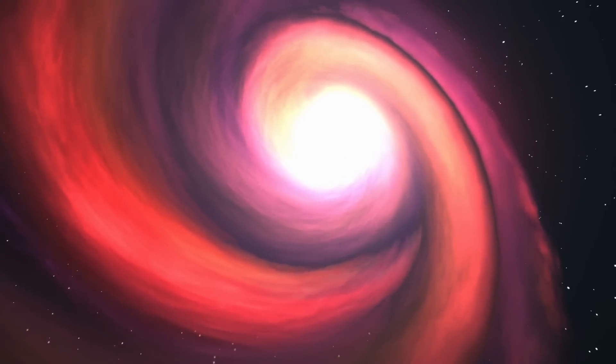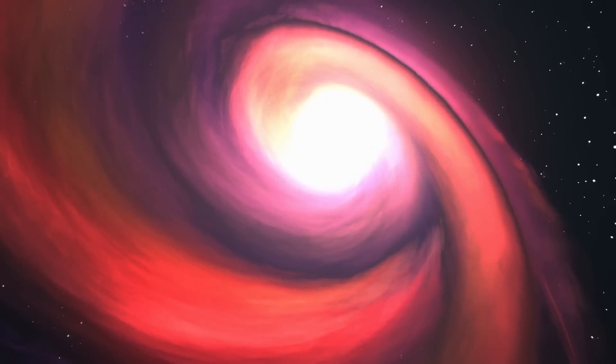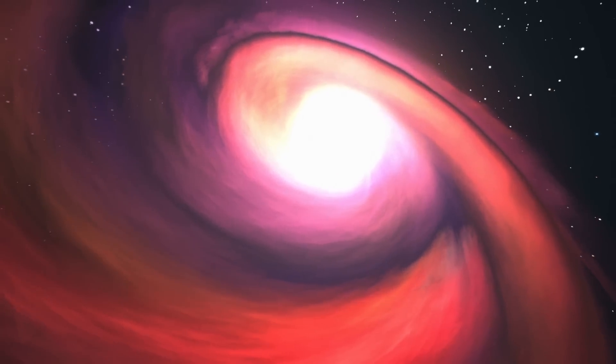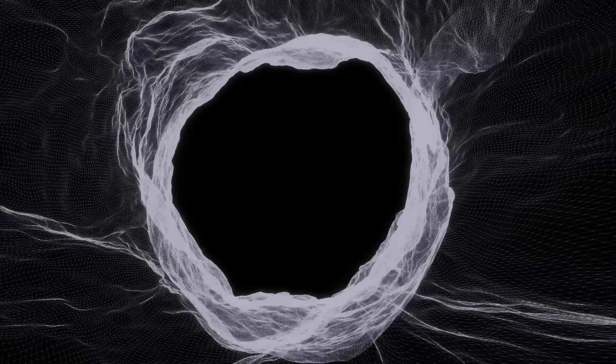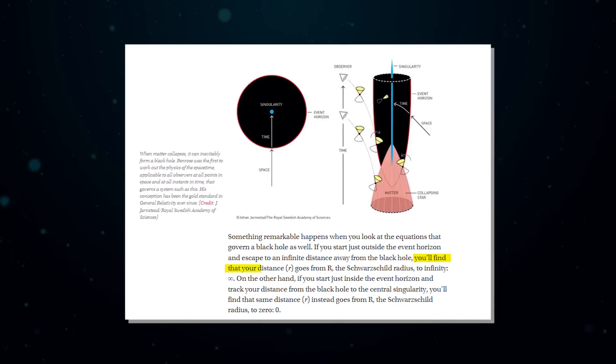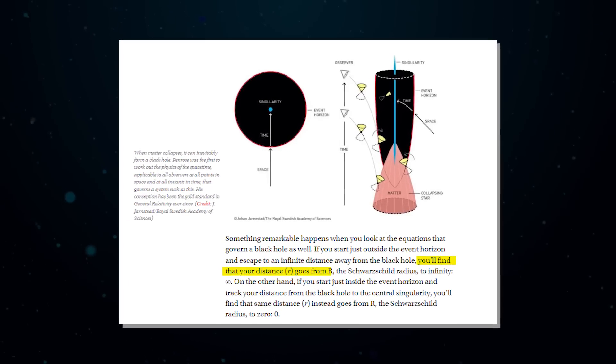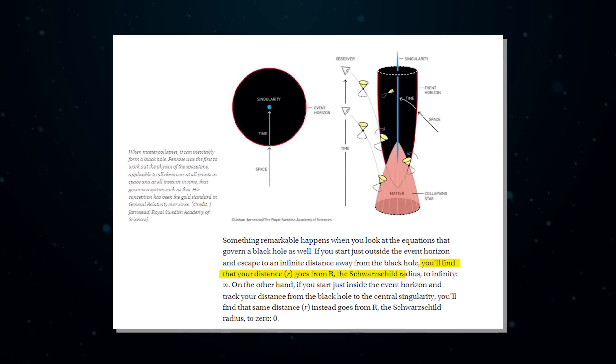Something remarkable happens when you look at the equations that govern a black hole as well. If you start just outside the event horizon and escape to an infinite distance away from the black hole, you'll find that your distance, R, goes from R, the Schwarzschild radius, to infinity.